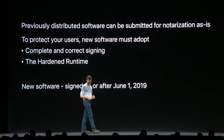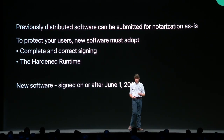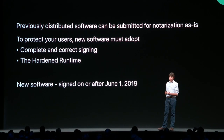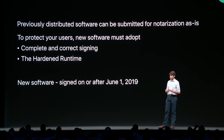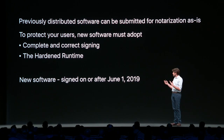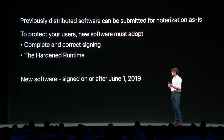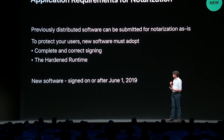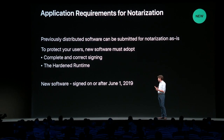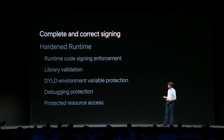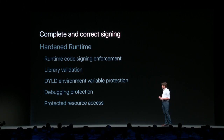For any software you've previously distributed, it doesn't have to meet any new requirements — you can submit your existing distributed software for notarization as-is without change. But for new software, you need to make sure it meets a few security requirements: it has to be completely and correctly signed, and it needs to adopt the hardened runtime. By new software, I mean software signed on or after June 1st, 2019. We'll go into detail on both complete and correct signing and the hardened runtime.